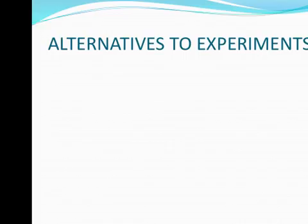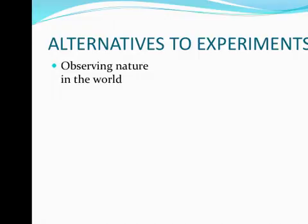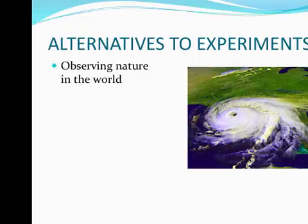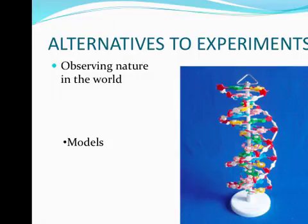Sometimes experiments aren't practical, so we need to come up with alternatives to controlled experiments. One thing that people do is observe nature in the world. For example, if we're going to study large storms like a tornado or a hurricane, we can't really create an experiment to do that — we have to observe the storms in the natural world. Another way to create scenarios that may not work in a controlled experiment is to use models. For example, DNA is a microscopic molecule in all living things, so we can build a model of DNA to actually be able to look at it and understand it, because it's not something we can observe without a very expensive microscope.